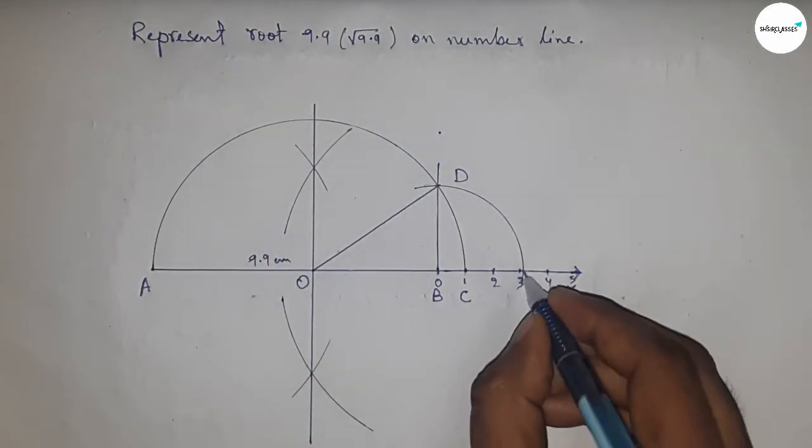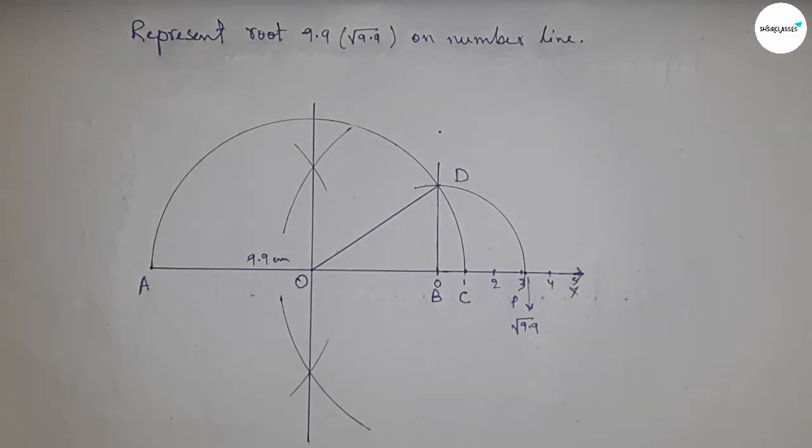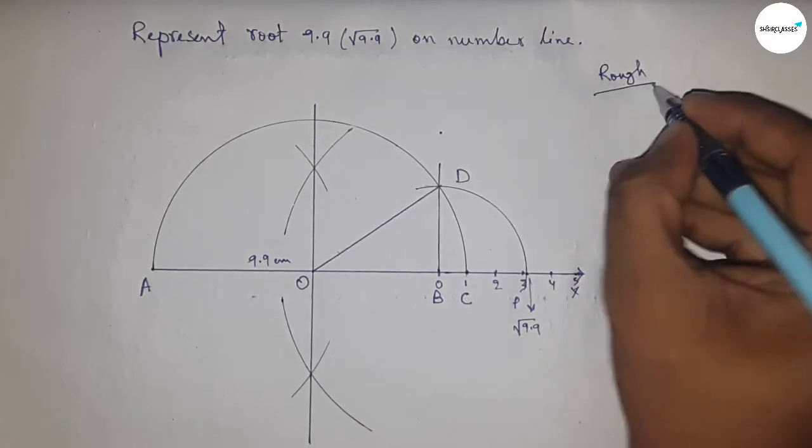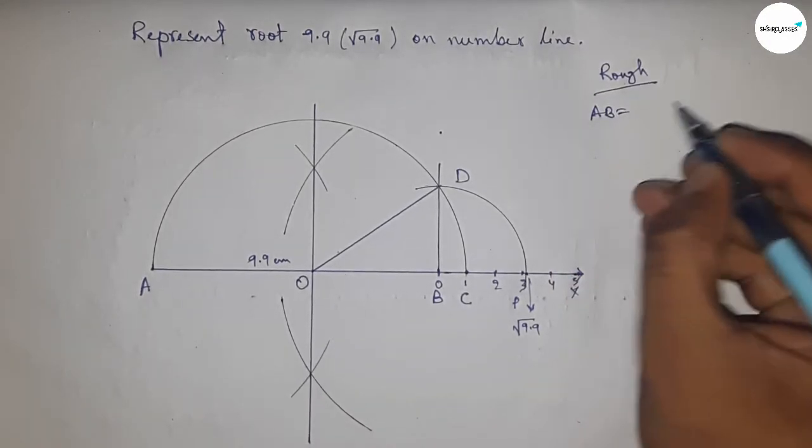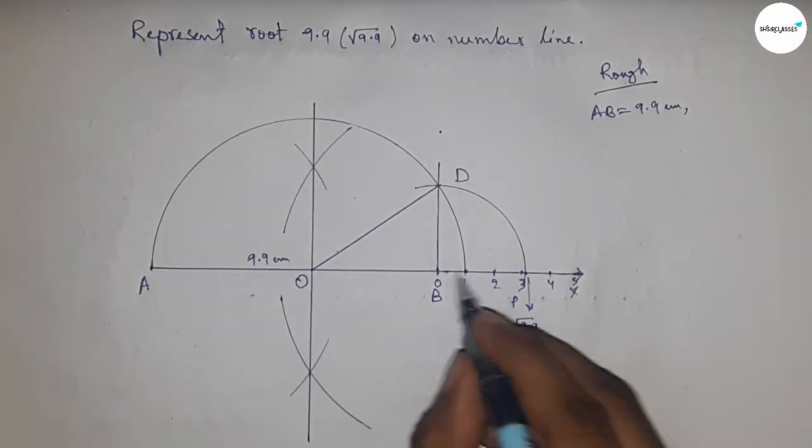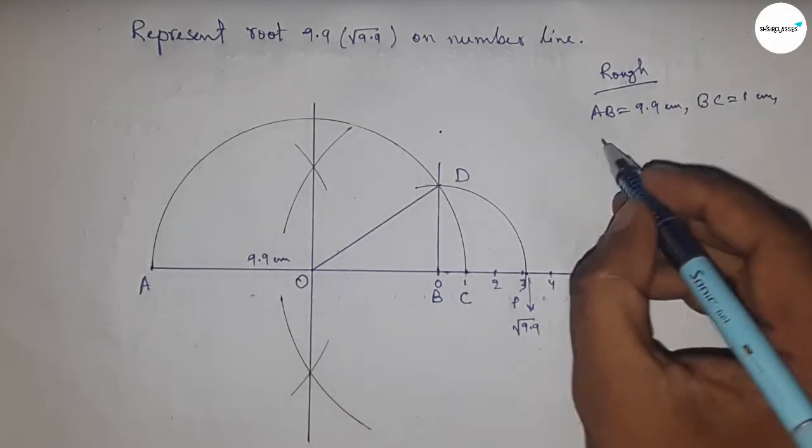And this is the representation of root 9.9 on number line. Now let's discuss the calculation. Given AB equal to 9.9 centimeter, BC equal to 1 centimeter.